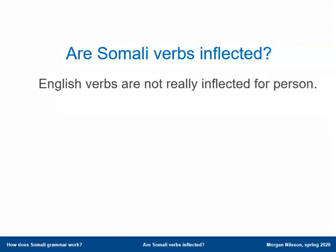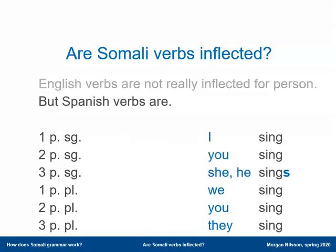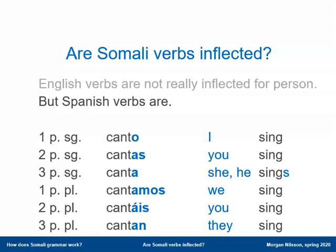English verbs are inflected for person in only one single case — the third person singular -s in the present tense. That's the only tense where this occurs, and it's only one form out of six possible forms found in many European languages. We could compare with Spanish, which works basically like Italian, French, German, Russian, and most Slavic languages.